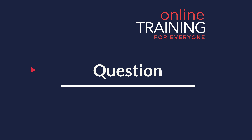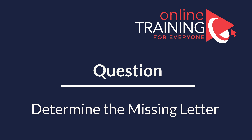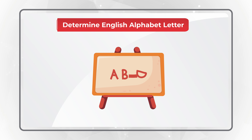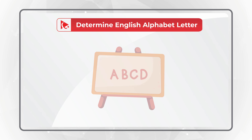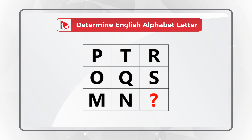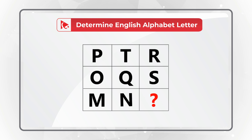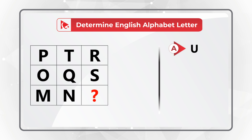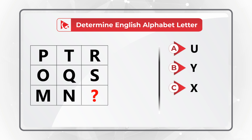Here's one of my favorite questions to test your verbal reasoning and knowledge of the English alphabet. You need to determine the missing letter to replace the question mark. You're presented with a 3×3 matrix containing letters P, T, R, O, Q, S, M, N, and the missing letter. Choose from: Choice A: U, Choice B: Y, Choice C: X, Choice D: V.